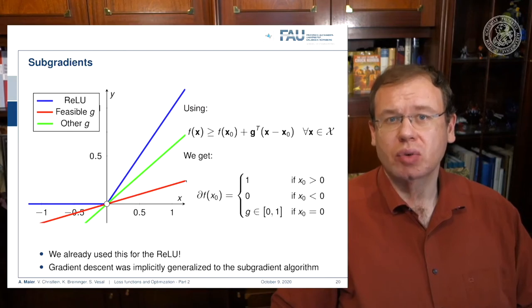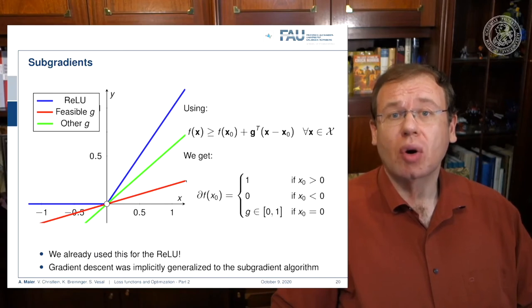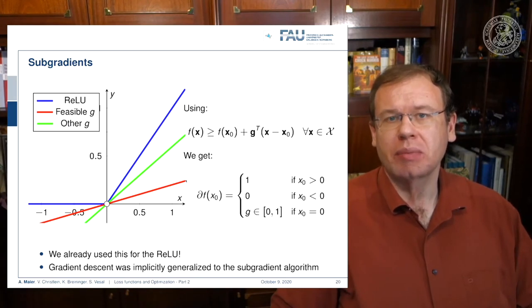Now let's look at a case where this is not true. In this example here, we have the rectified linear unit, which also has exactly the same problem. Again, it's a convex function, which means here at the point where we have the kink, we can find quite a few subgradients. Actually, you see the green line and the red line; both of them are feasible subgradients and they fulfill this property that they are lower bounds to that respective function. This means that we can now define a sub-differential. Our sub-differential is essentially one where we have x zero greater than zero, we have zero where it's smaller than zero, and we have exactly g, and g can now be any number between zero and one at the position x zero equals zero. This is nice because we can now follow essentially the subgradient direction.